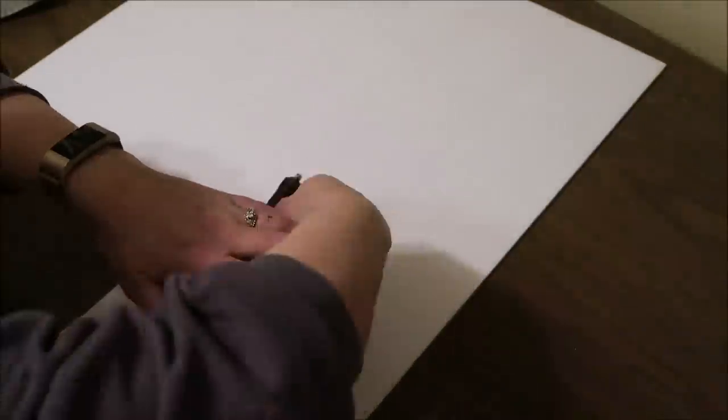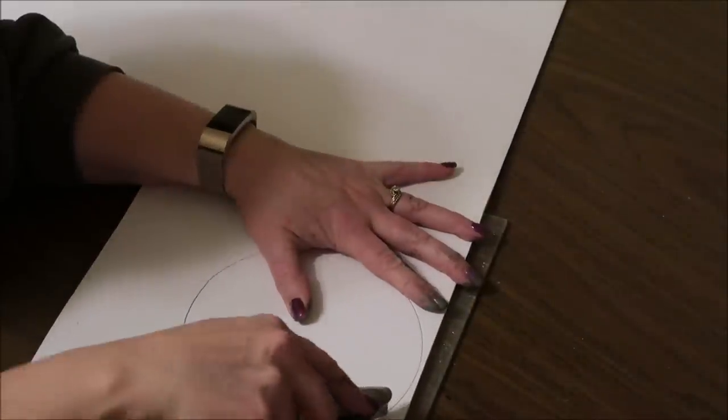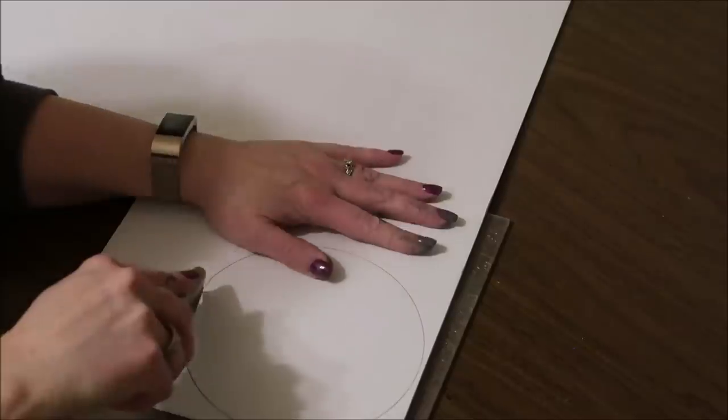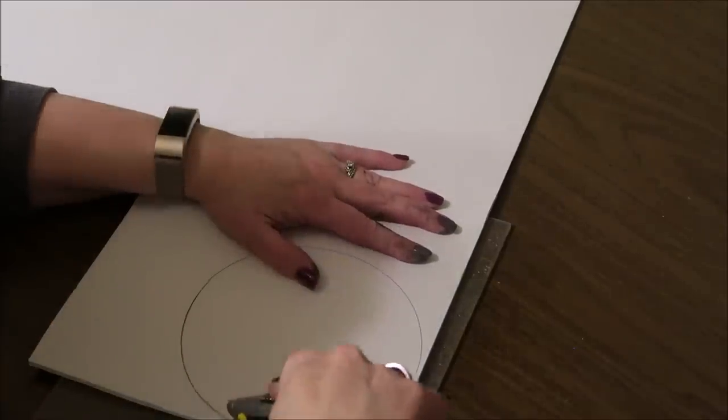I'll be cutting the center of the flower out of this foam board that you can pick up at Dollar Tree. I'm just using that flower pot as my template and then I'll just cut it out using my razor knife.